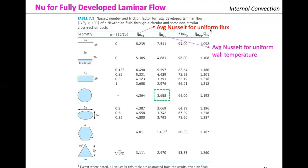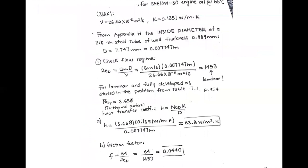We go to Table 7.1 to read the constant Nusselt number. The problem specifies an isothermal surface, so we read the Nusselt number for uniform wall temperature with a circular cross-section, giving Nu = 3.658. The convective heat transfer coefficient is then Nu × k / D, giving approximately 63.8 W/m²·K. For the friction factor with fully developed laminar flow in a circular pipe, f = 64 / Re.